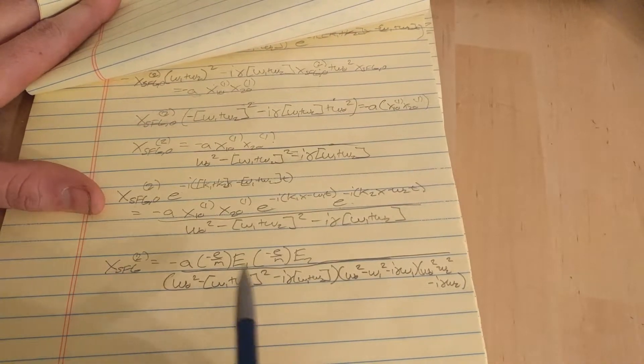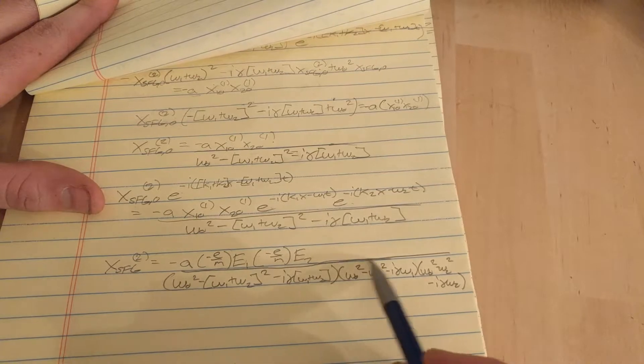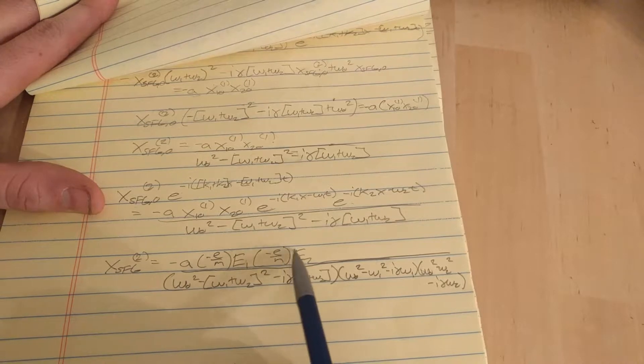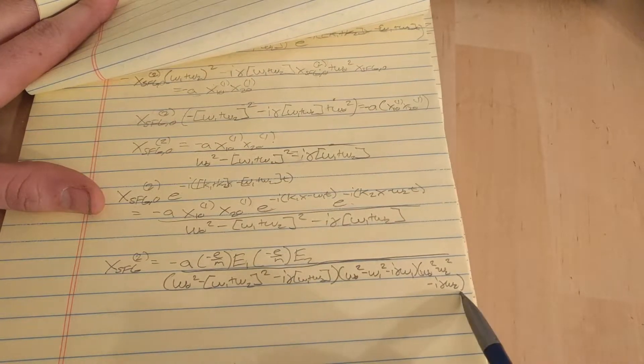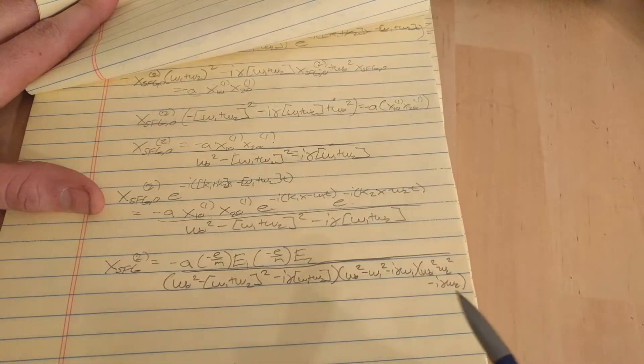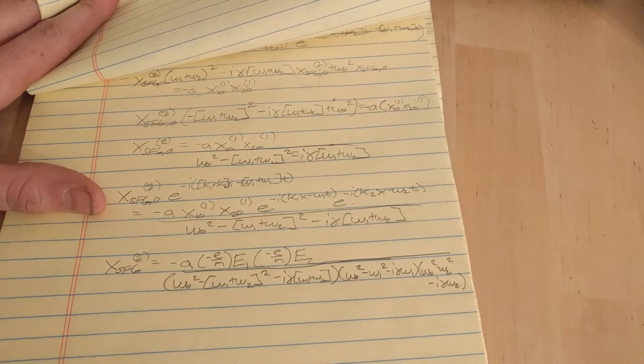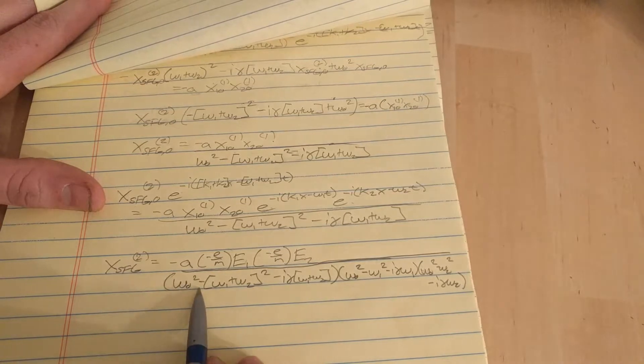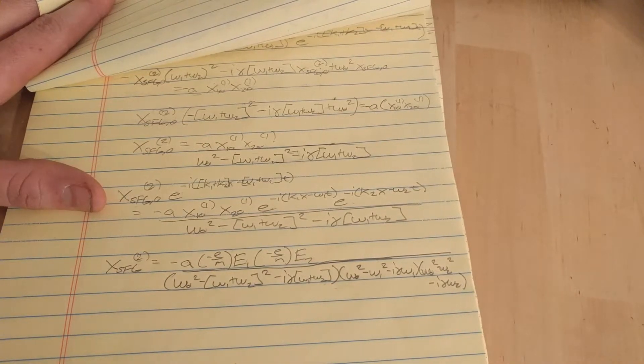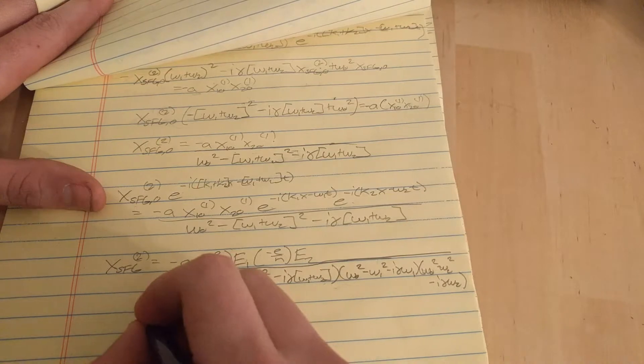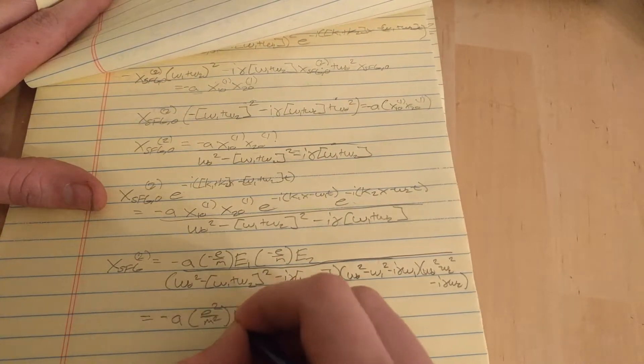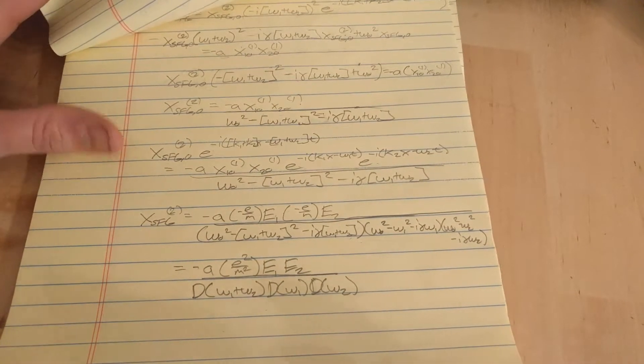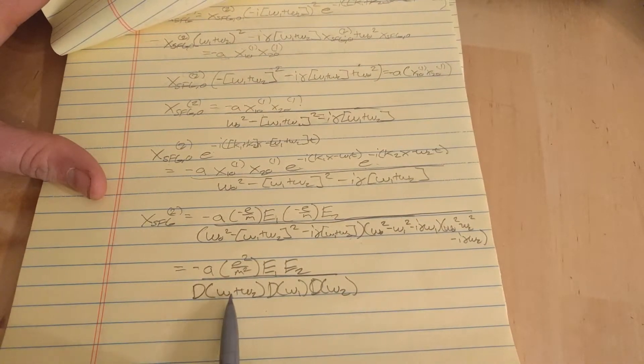Now we don't have any X's on the right side, we just have the electric fields. Notice that this part along with this denominator is just X1, and this part along with this denominator part is just X2. So I'm going to simplify this a little bit and I'm going to rewrite my denominators as a commonly used denominator function.